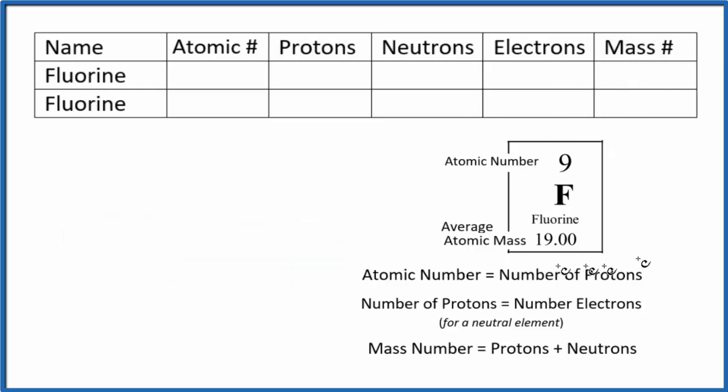When we look at the periodic table and we see fluorine, we see the atomic number is 9. So we're going to write 9 for the atomic number. There are two isotopes of fluorine. We'll talk more about isotopes later. But it doesn't really matter what isotope you have. Fluorine will always have an atomic number of 9.